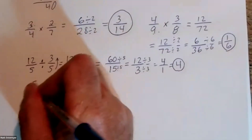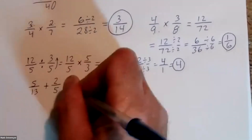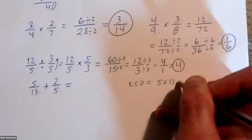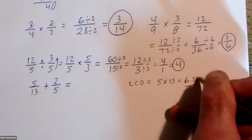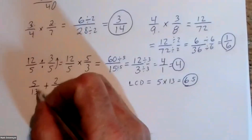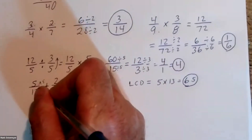Number five: five thirteenths adding two over five. Now we need a common denominator of five and thirteen. It's going to be five times thirteen, which is sixty-five. So what I'm going to multiply this fraction by to build it up to the equivalent fraction with denominator sixty-five — I'm going to multiply by five over five.